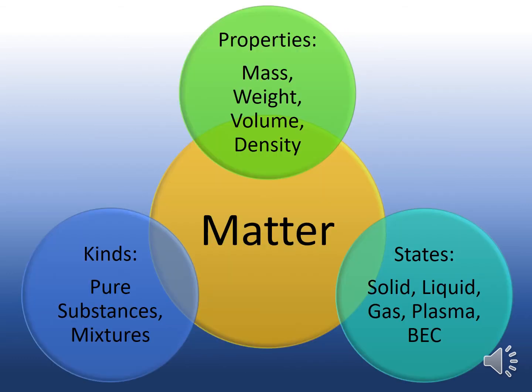This illustration shows us different aspects of matter. The first are the properties of matter, like mass, weight, volume, and density. Then we have the different states: solid, liquid, gas, plasma, and Bose-Einstein condensate. Next are the different kinds of matter: pure substances and mixtures.